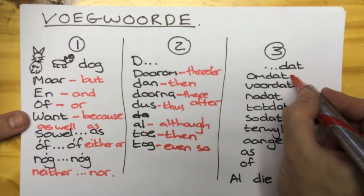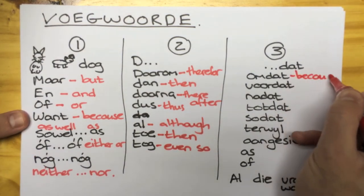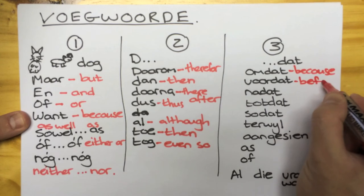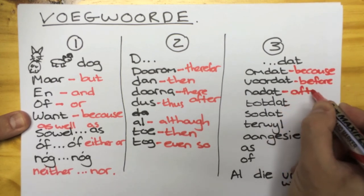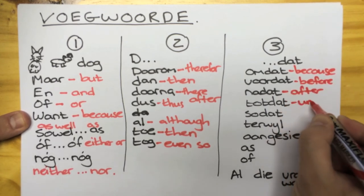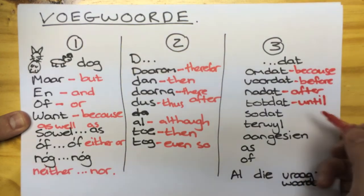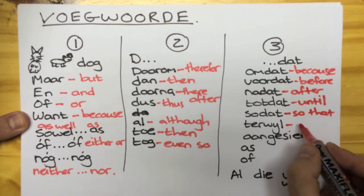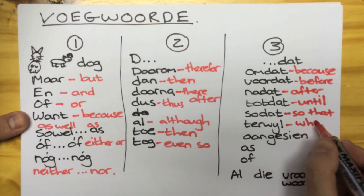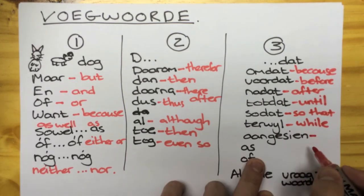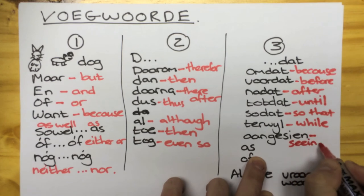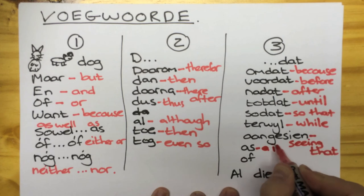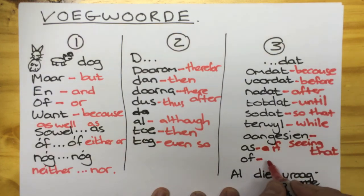Group 3: omdat also means because; voordat — before; nadat — after; todat — until; soedat; terweil — while, or in the meantime; aangesin — seeing that; as — if; of — if as well.